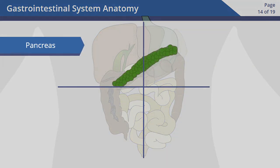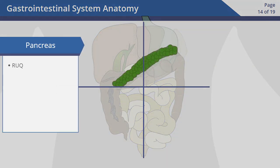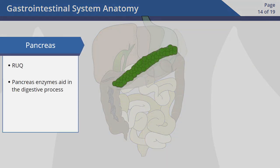The pancreas is located behind the stomach in the right upper quadrant. Pancreas enzymes aid in the digestive process by breaking down sugars, fats, and starches.